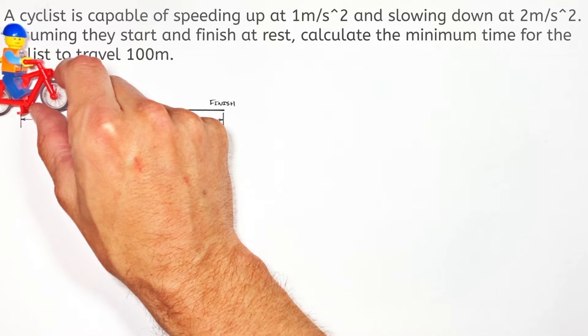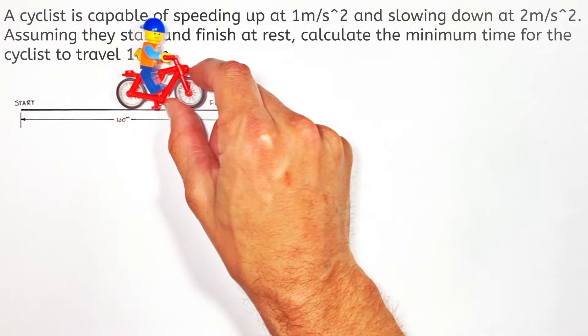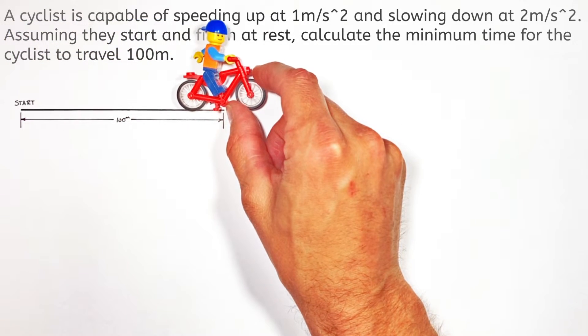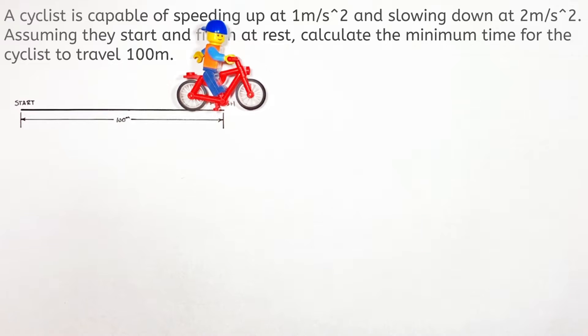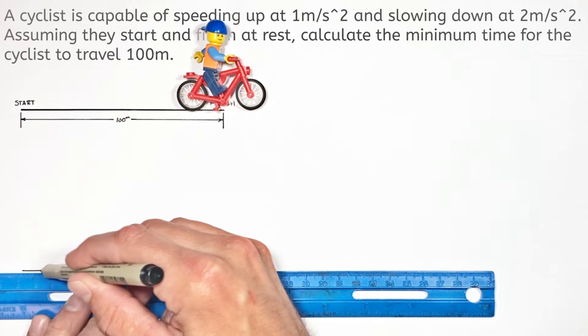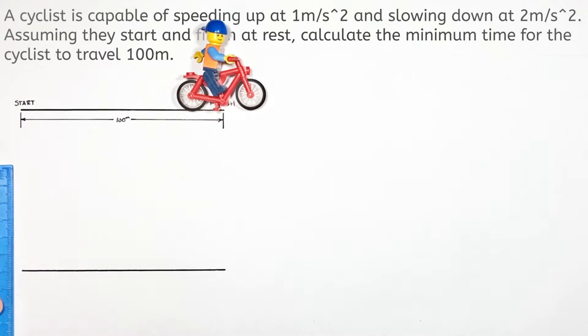And the problem typically goes like this. The bike can accelerate from rest at 1 meter per second squared and slow back down at 2 meters per second squared. And we're trying to solve for the minimum time it's going to take our little dude on a bicycle to travel a set distance, in this case 100 meters.